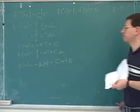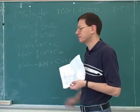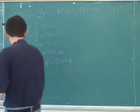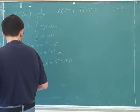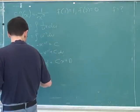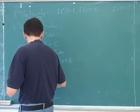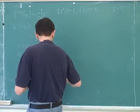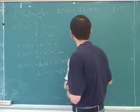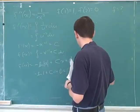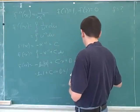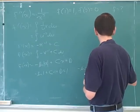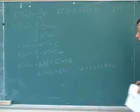So first of all, we have to be very comfortable with taking anti-derivatives. And now we have to figure out what these constants are, so we plug in. f of 1 is 1, so that would give us negative natural log of 1 plus c times 1 plus d equals 1. And we have negative natural log of 2 plus 2c plus d equals 0.